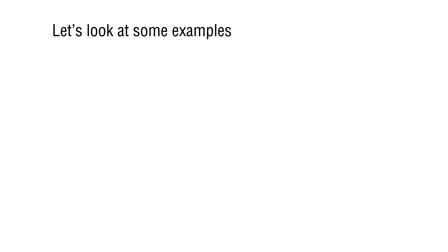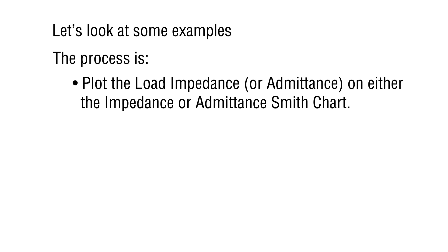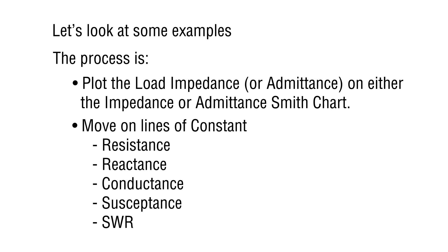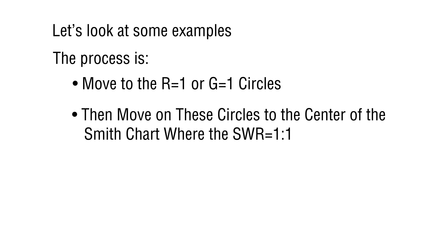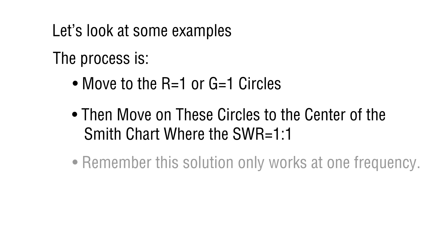Let's look at several examples. Here's the general procedure: First, plot the load impedance or admittance point on the impedance or admittance Smith chart. Then determine a plan to move this point along lines of constant resistance, reactance, conductance, susceptance, or constant standing wave ratio to ultimately land on the R equals 1 or G equals 1 circle. Then finally move on these circles by combining reactance or susceptance to terminate on the center of the chart where the standing wave ratio is 1 to 1.